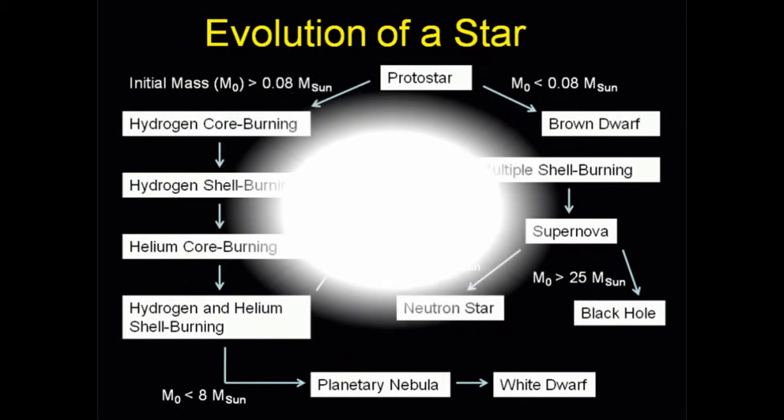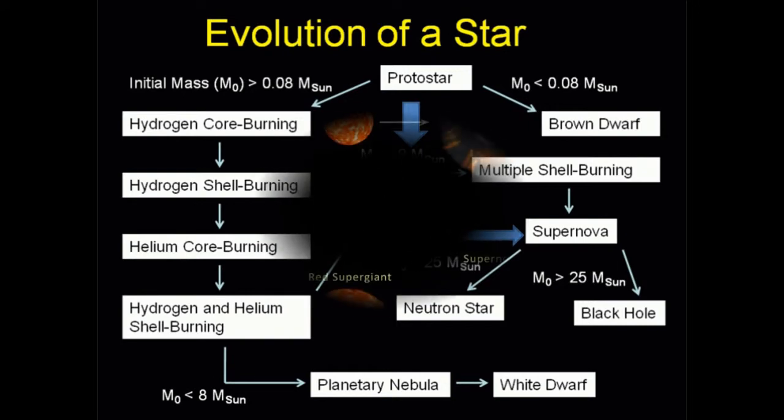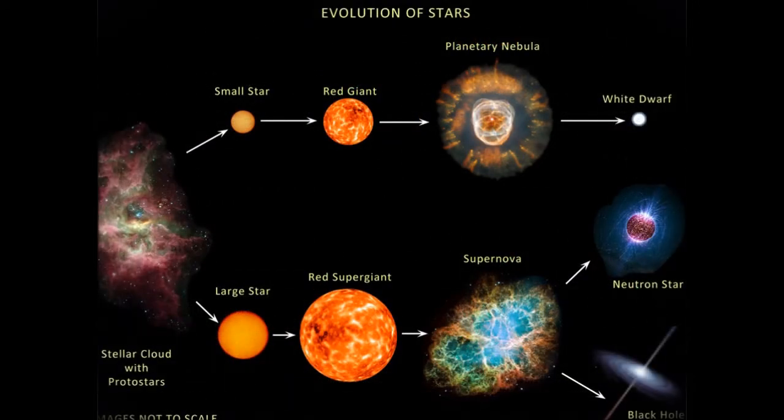Once the inner core begins to change into iron, the gravity overwhelms the pressure of the hot gas, and the star implodes falling in on itself. The core temperature rises to nearly 10 billion Kelvin. Like a fast moving ball hitting a brick wall, the core becomes compressed, stops, then rebounds with a vengeance.